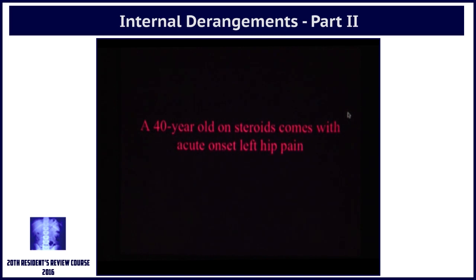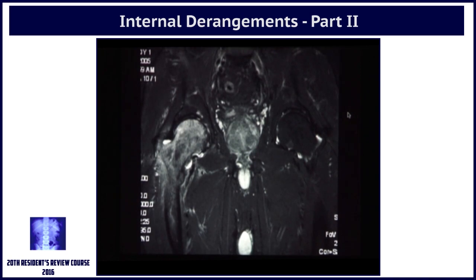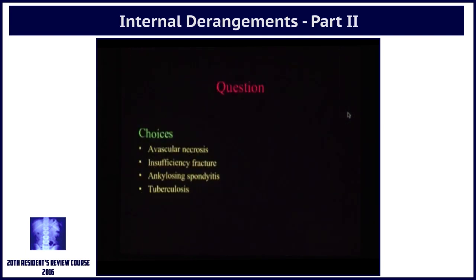A patient on steroids who comes with acute onset right hip pain. This is the image that you have and you will get 4 choices. So is this: 1) avascular necrosis, 2) insufficiency fracture, 3) ankylosing spondylitis, or 4) tuberculosis?